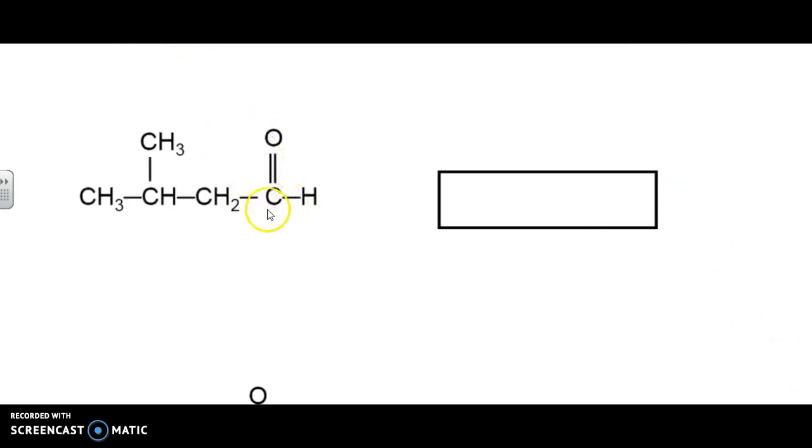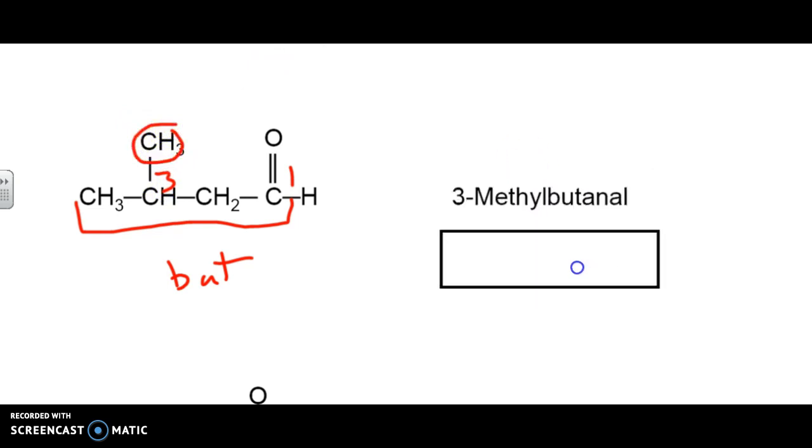If we look at this example right here, we can see it's a four-carbon chain, so it's going to be a but. Because this is going to be our ending, this is by definition spot one, which means at spot three we've got our methyl group. So if we put it all together, we're going to see that it's 3-methyl butanal.